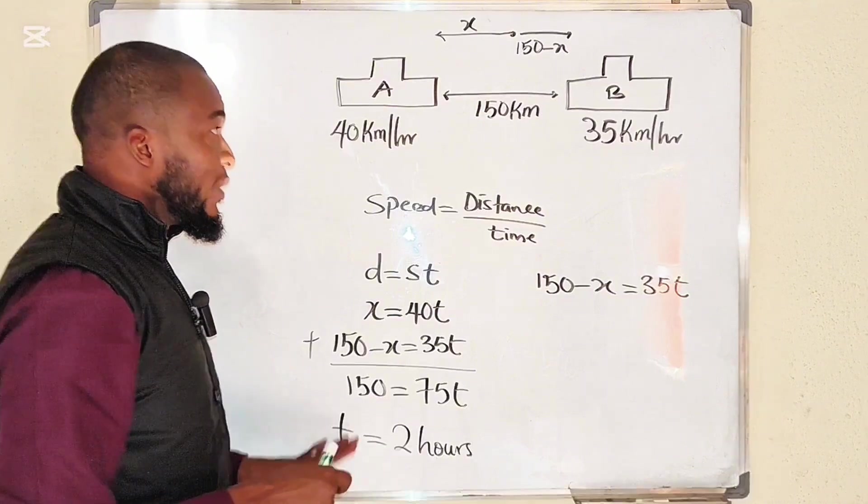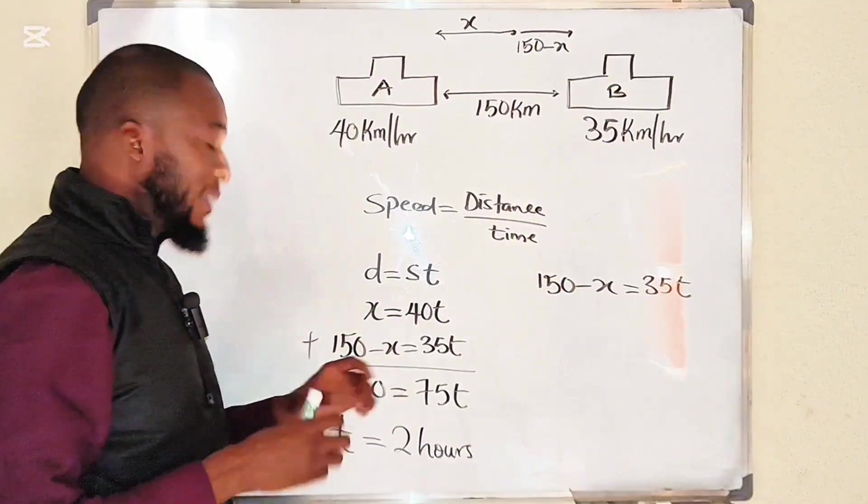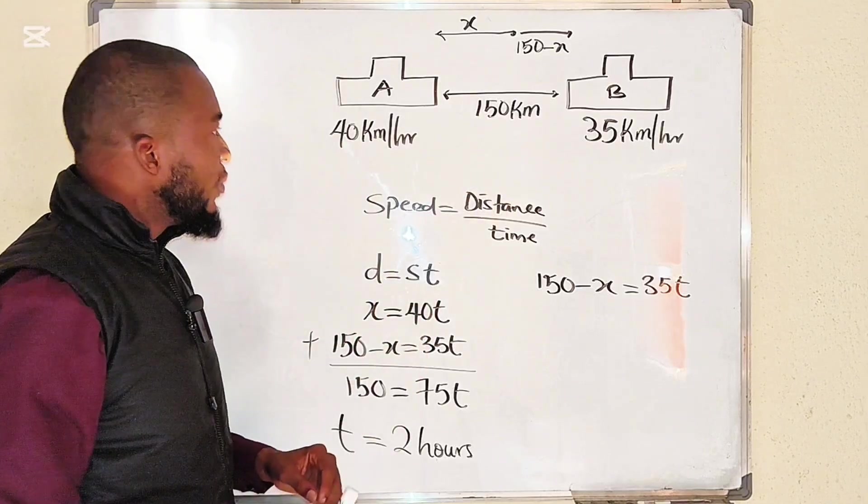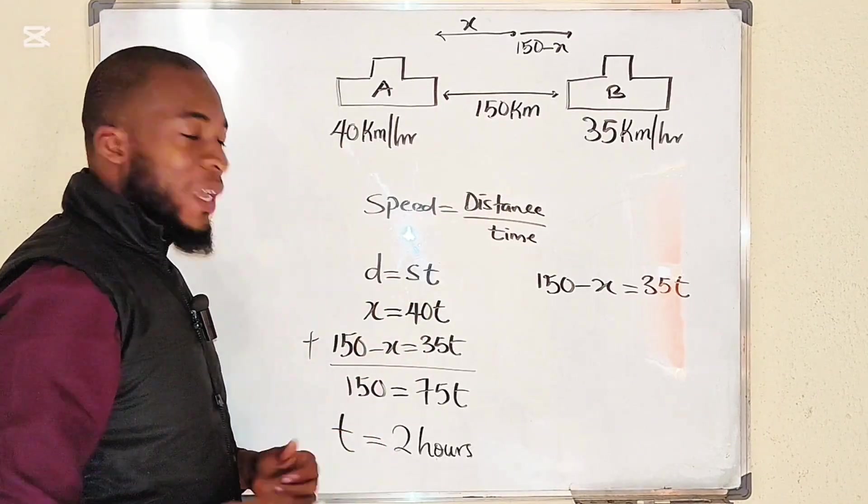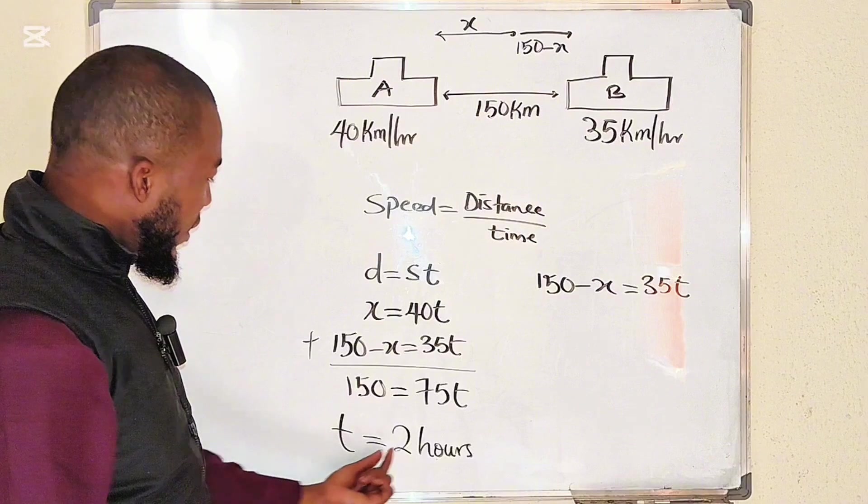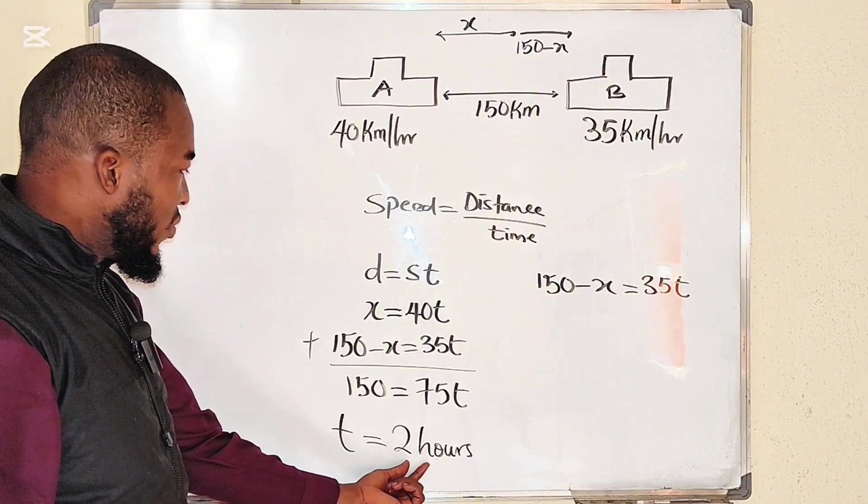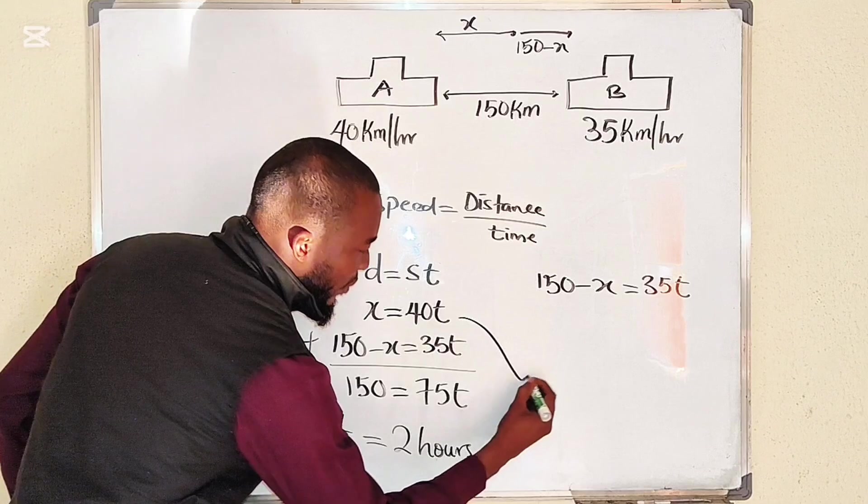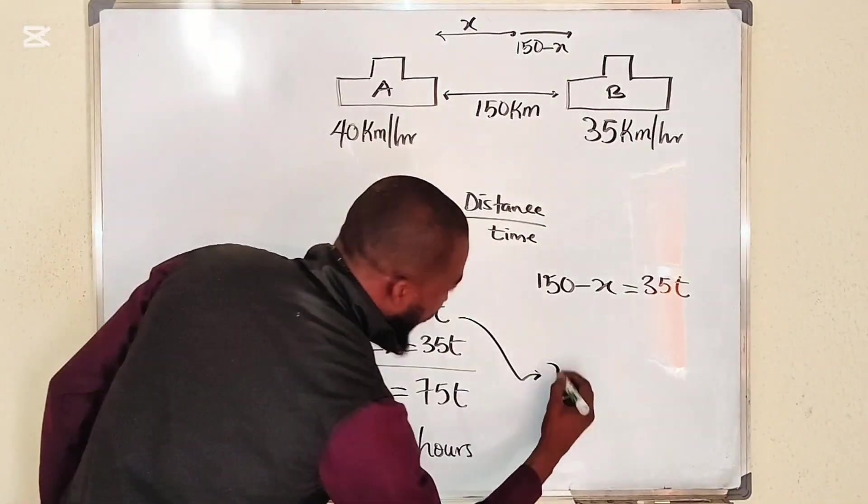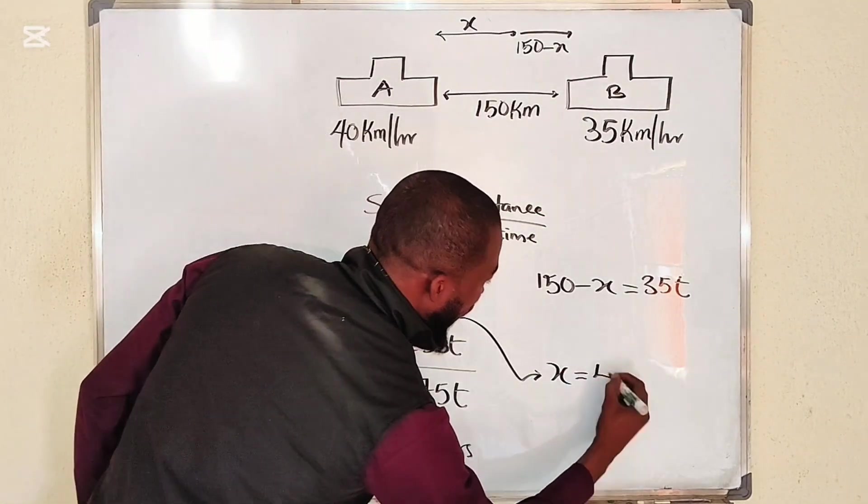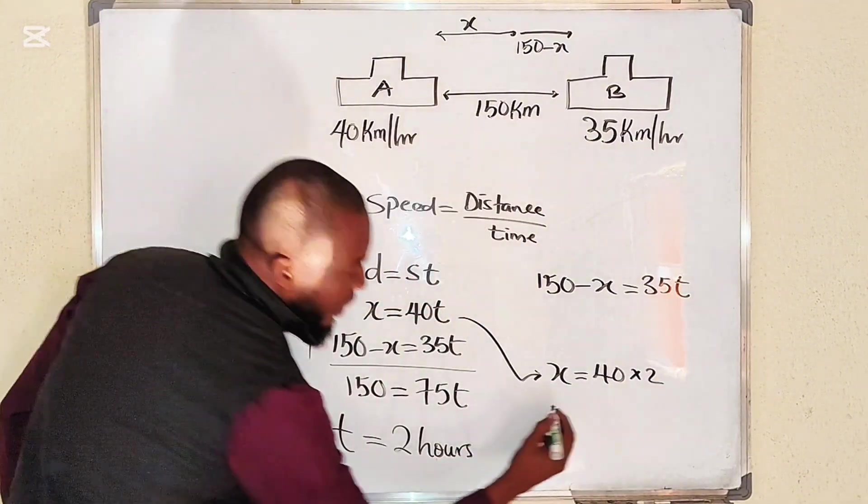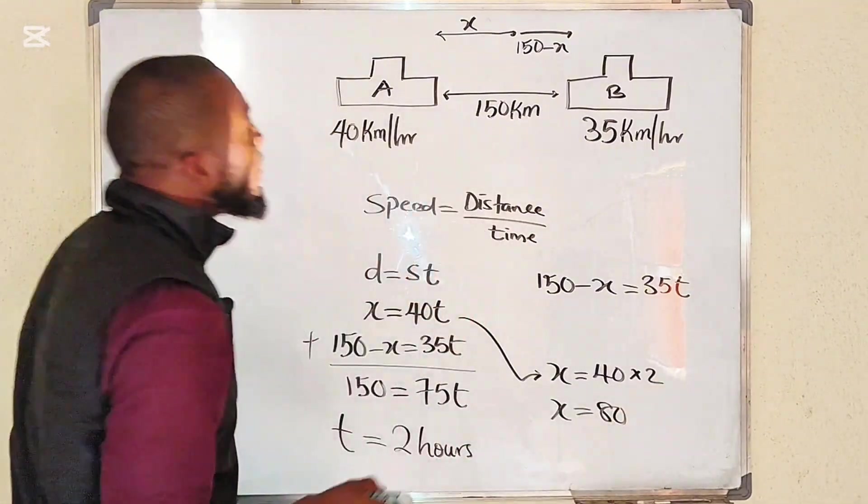Time taken for them to collide is 2 hours, and I told you that this time is the same for each car. So what will be the distance covered by each car? Let's use this equation where we have x equal to 40t, but t is 2, therefore x is equal to 80.